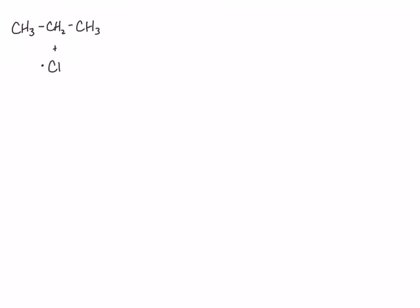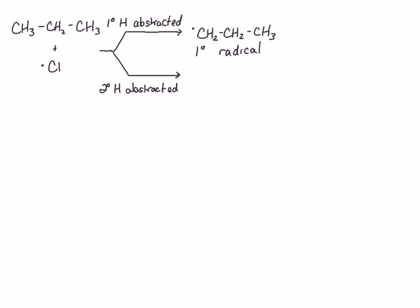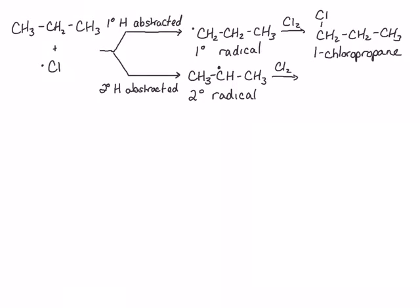The determination of which product is formed occurs in the propagation steps. The initiation and termination steps for the formation of 1-chloropropane and 2-chloropropane are the same, so we're just going to look at the propagation steps. In the first propagation step, a hydrogen atom is abstracted from propane — this can occur at either a primary or a secondary carbon, giving a primary or secondary radical respectively. The second propagation step forms the chlorinated product: the primary radical forms 1-chloropropane, and the secondary radical forms 2-chloropropane.